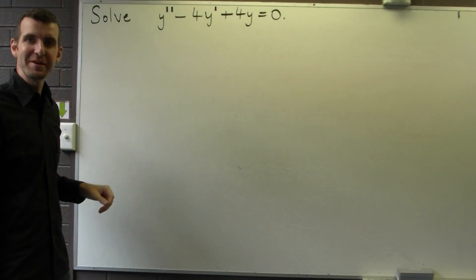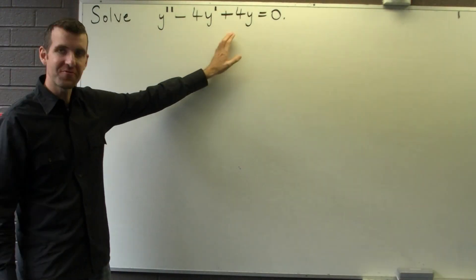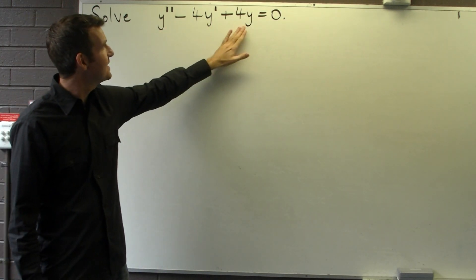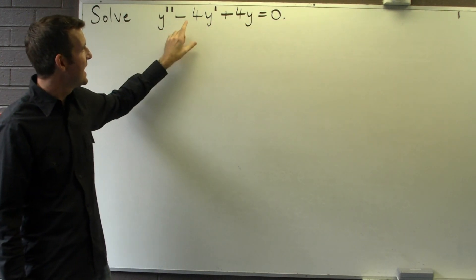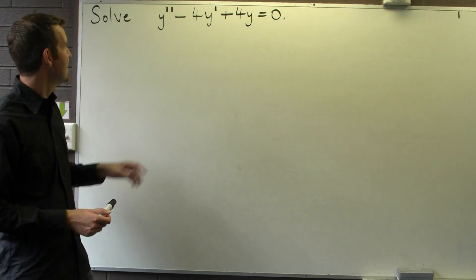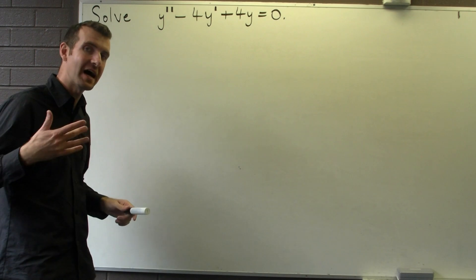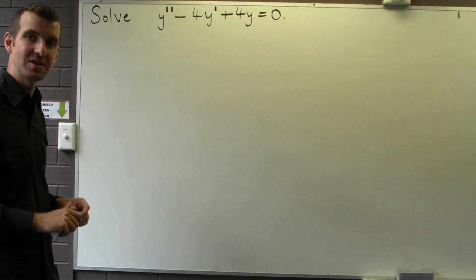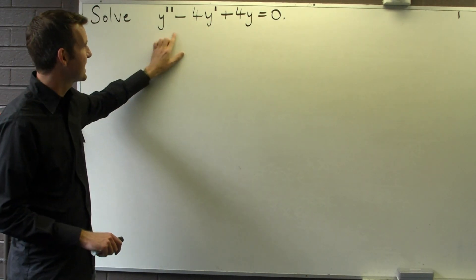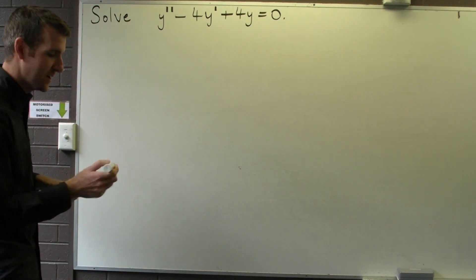Here we have a second-order ordinary differential equation that is linear and has constant coefficients, and we're asked to solve it. We want to find the unknown function that satisfies this particular differential equation.